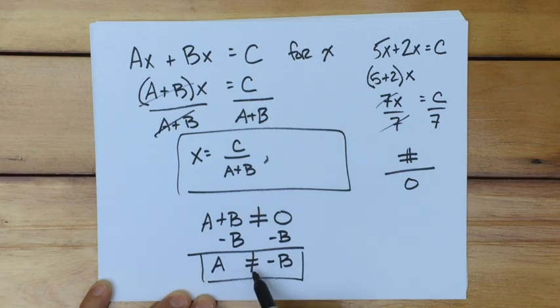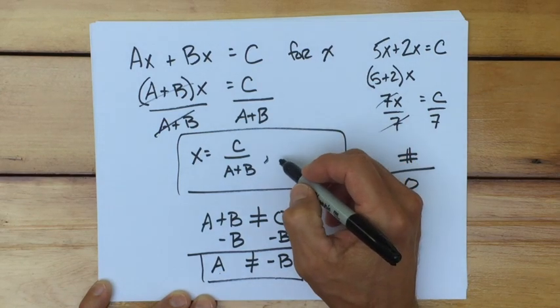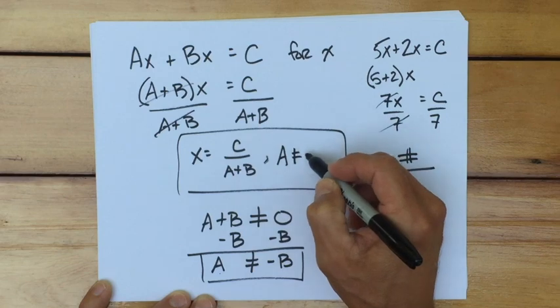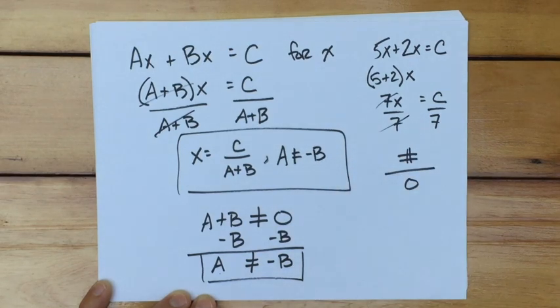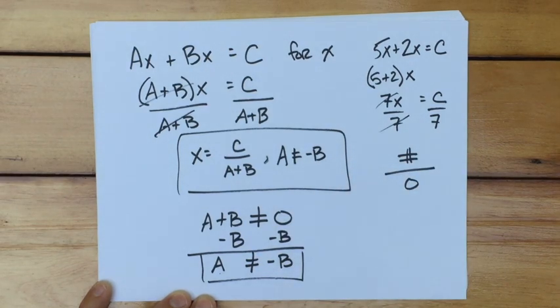a cannot equal the opposite of b. In other words, if this is 5, this can't be negative 5. So what I'm going to find myself doing is a cannot be negative b. And as long as those two things are not the same, then we're okay. Otherwise, we've solved a literal equation.